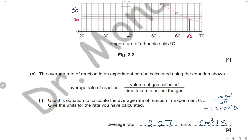The average rate of reaction can be calculated using the equation: average rate = volume of gas collected ÷ time taken to collect the gas. Use this equation to calculate the average rate of reaction in experiment 6, and give the units. The volume collected is 100 cm³ and the time for experiment 6 is 44 seconds. So the rate = 100 ÷ 44 = 2.27 cm³ per second.